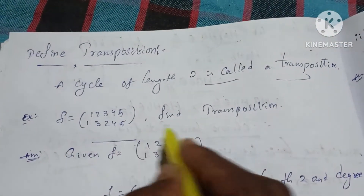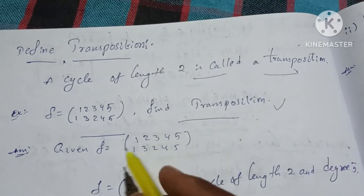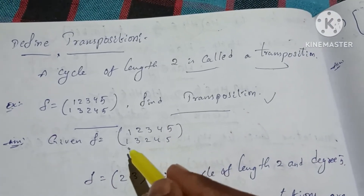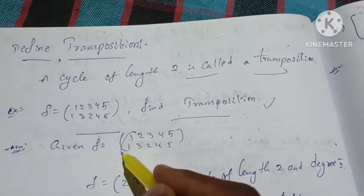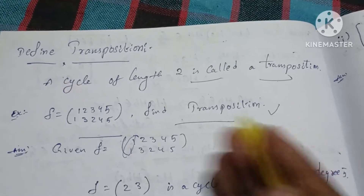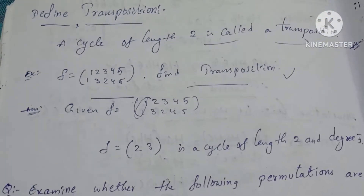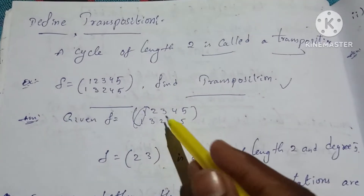If you have one permutation, find the transposition. Given f is equal to (1, 2, 3, 4, 5; 1, 3, 2, 4, 5). Let's do the cycles. So 2 goes to 3, 3 goes to 2.